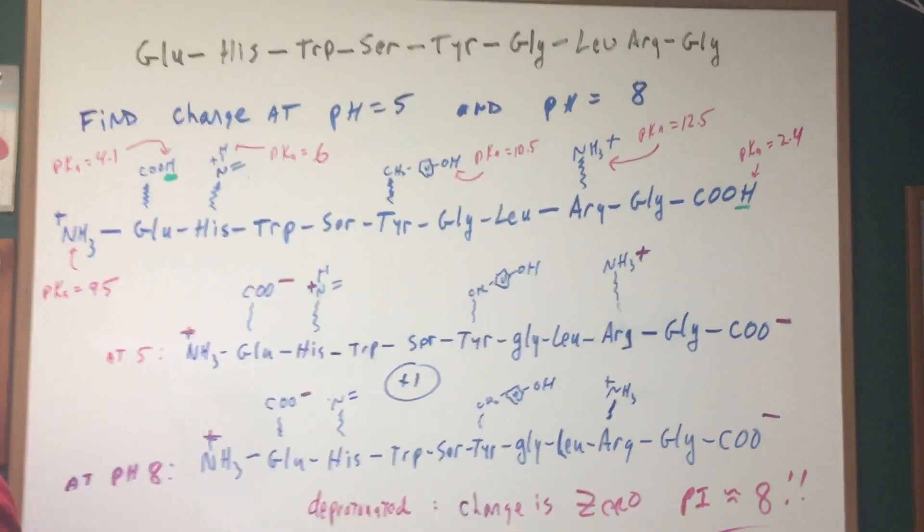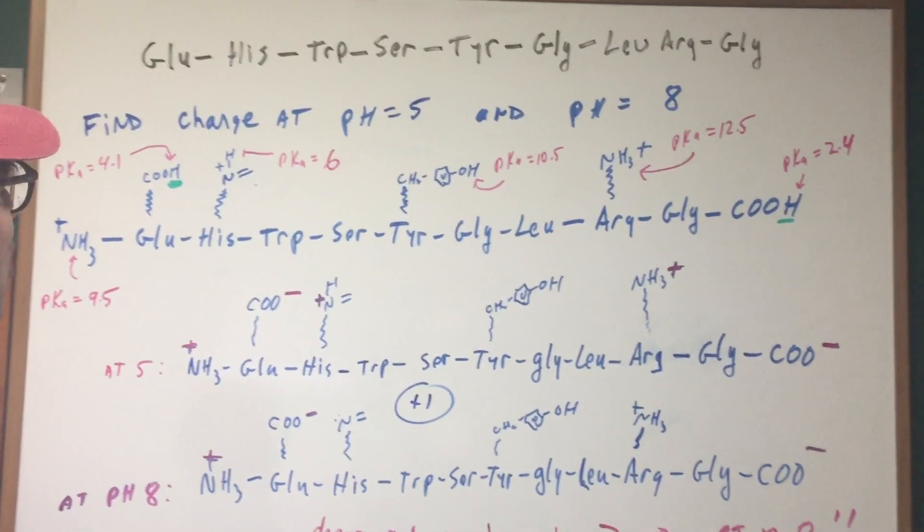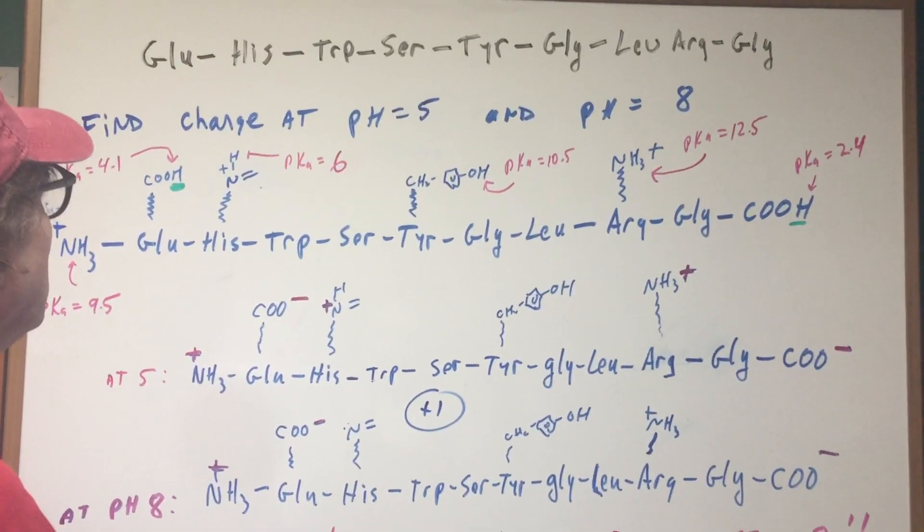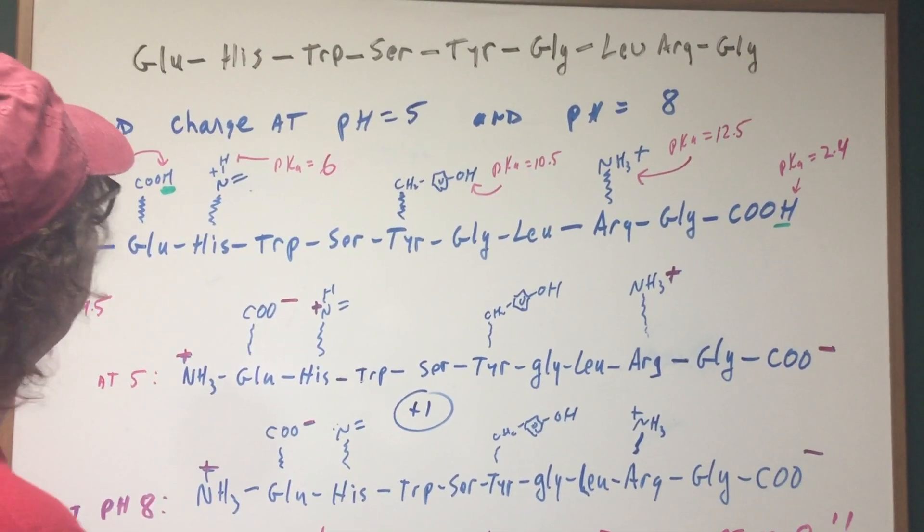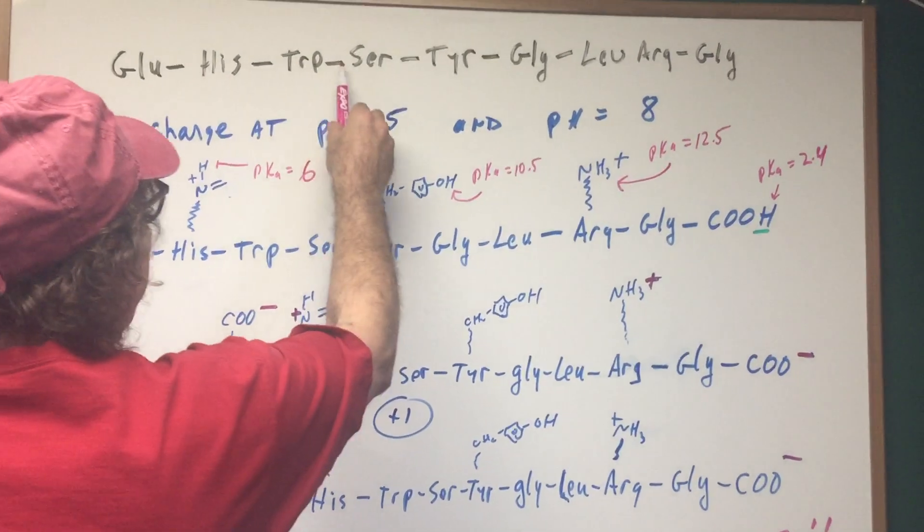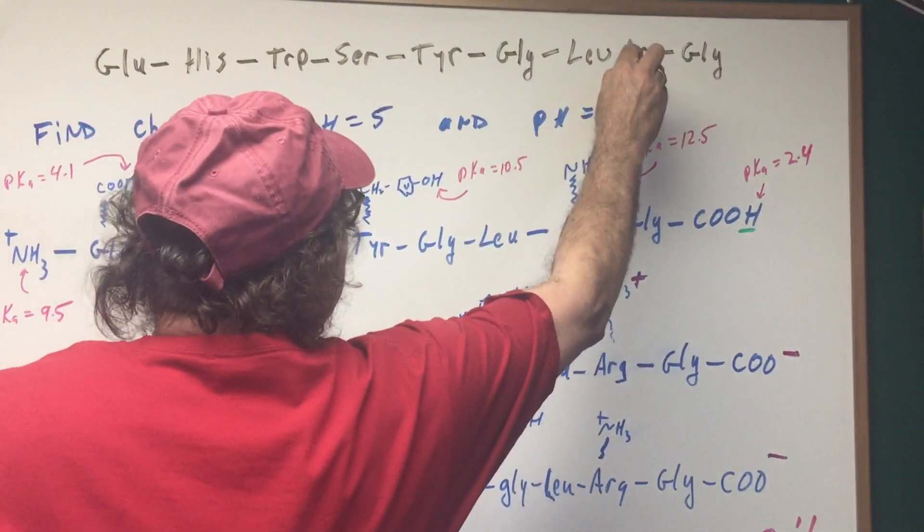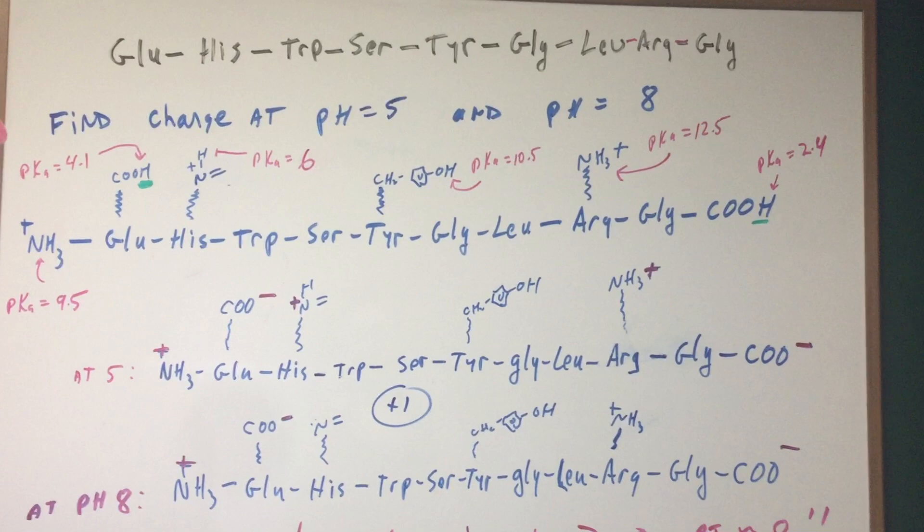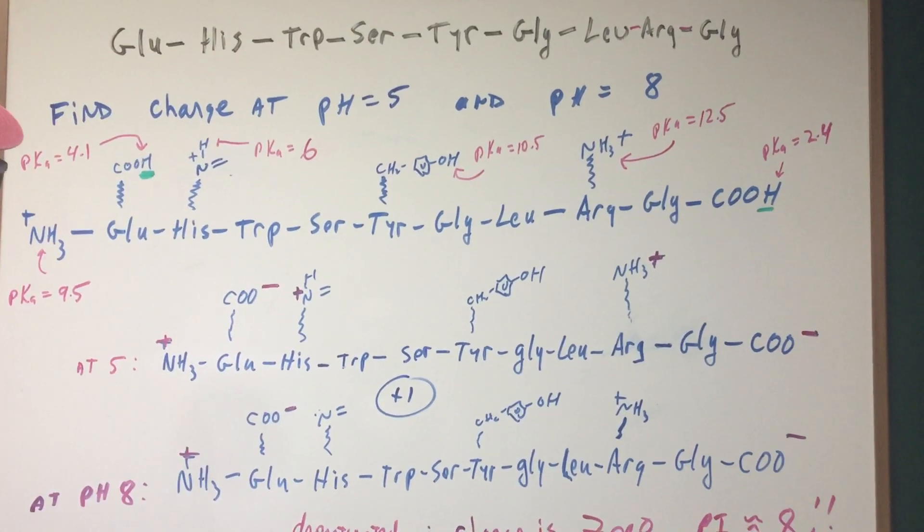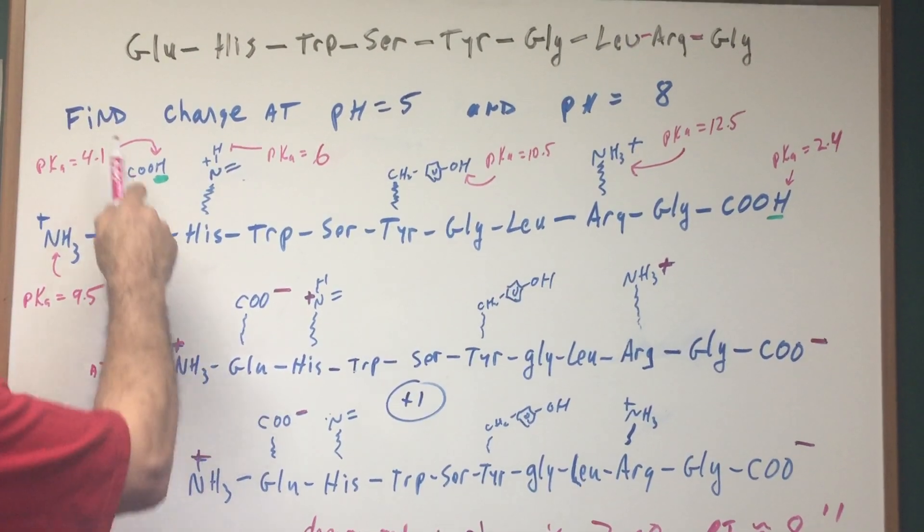So let's have a look at a species that has nine amino acids in it. Notice if it's got nine amino acids, there's going to be eight peptide bonds. One, two, three, four, five, six, seven, and eight. That's always a good question. Now, this has nine amino acids, so we call it a nonapeptide.